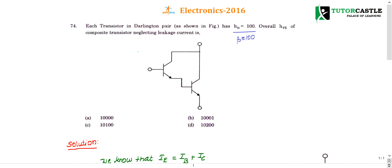Question number 74: each transistor in a Darlington pair has HFE — HFE is nothing but beta, the common emitter gain. For this configuration, beta for the first transistor is 100 and beta for the second transistor is also 100, so they are connected in a Darlington pair.